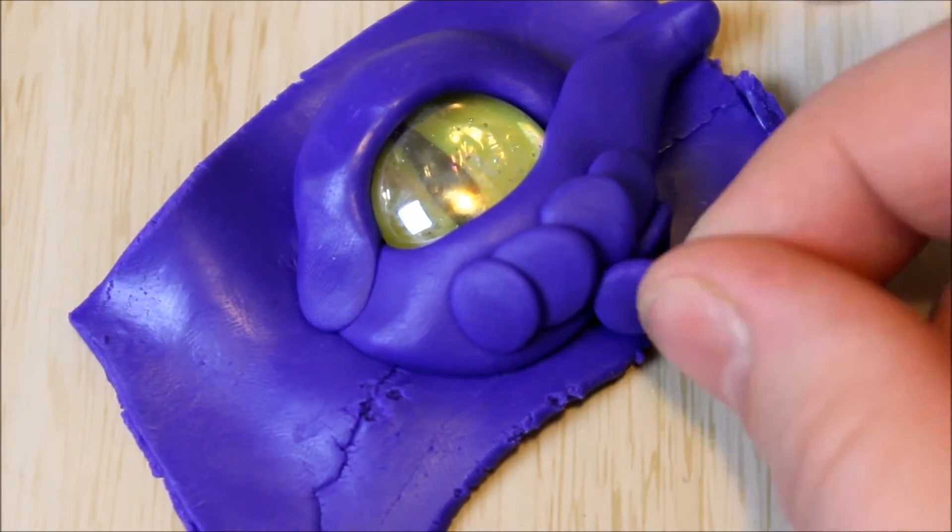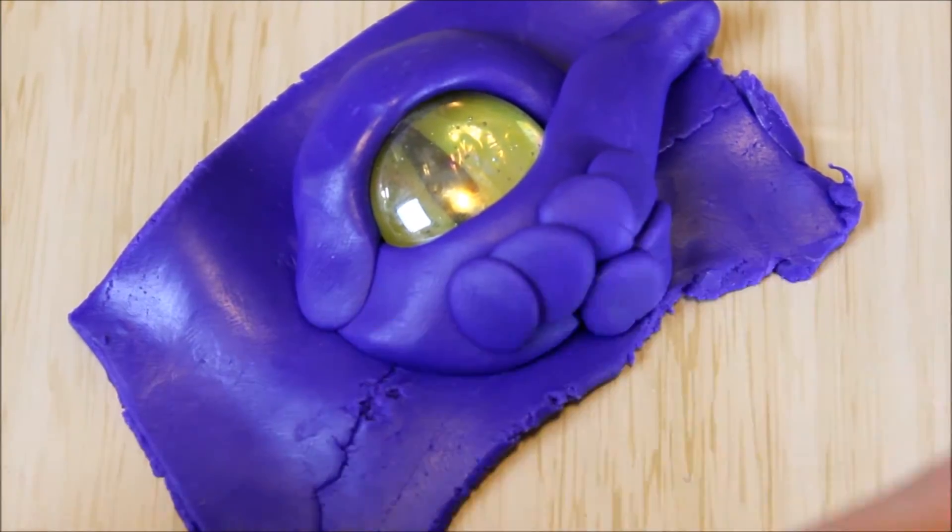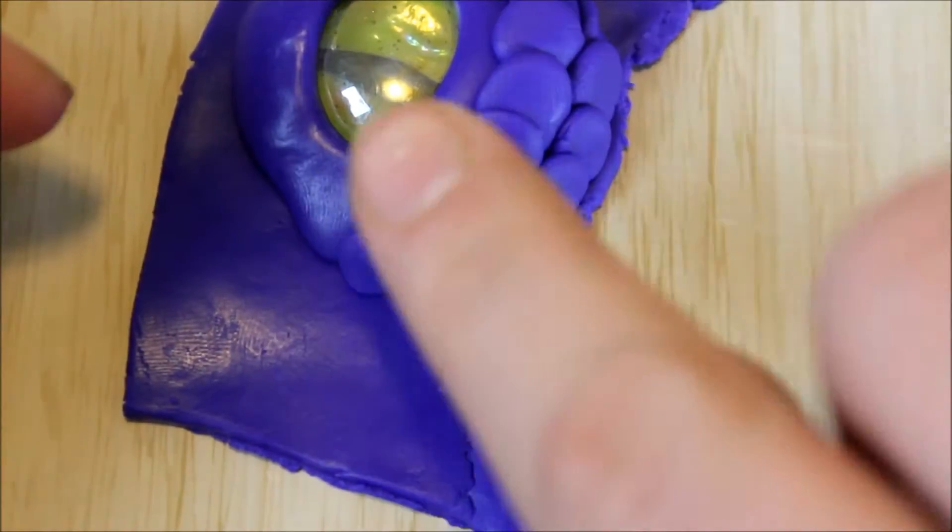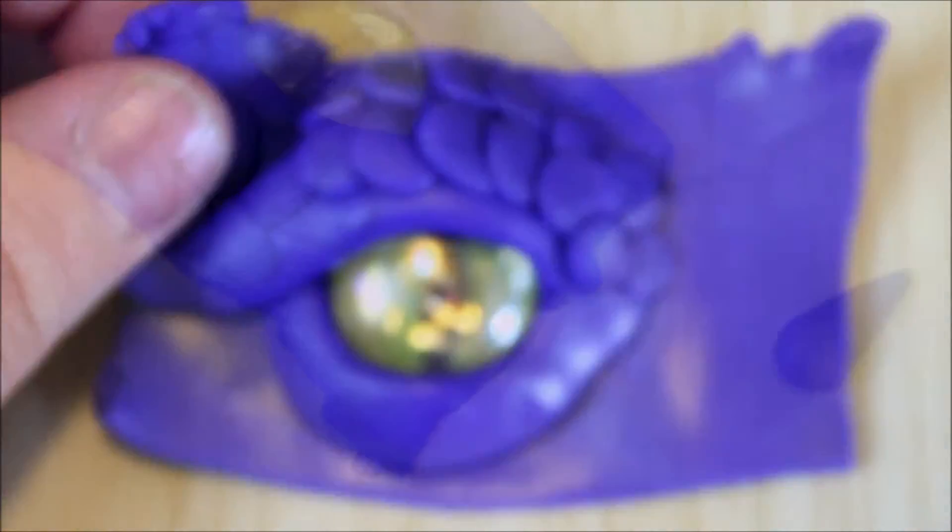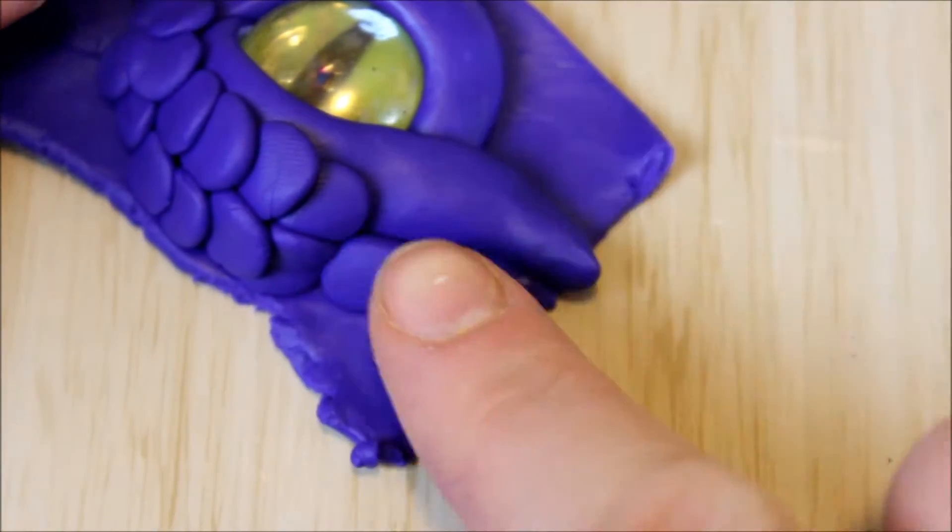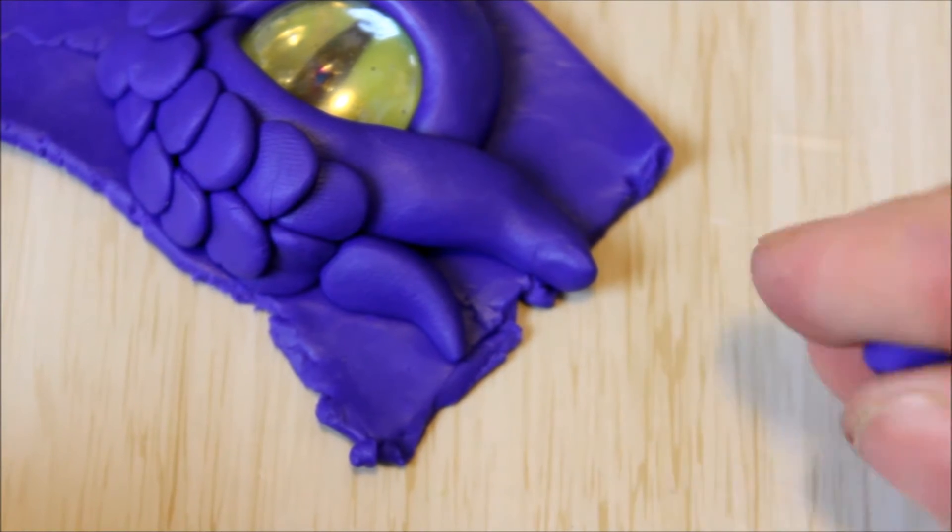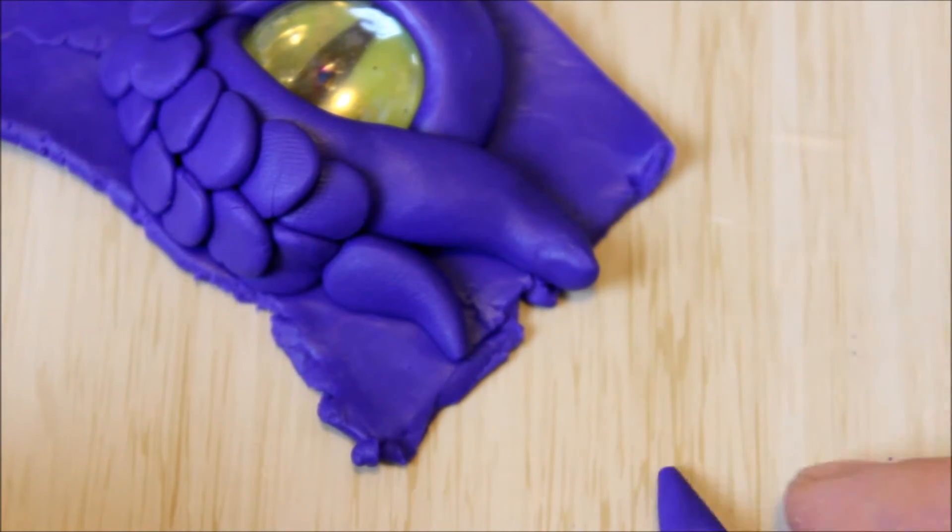So I started by creating my top lid by adding little bits of scales by rolling out little balls of clay that I sort of squished between my fingers to create a nice flat disc. And I started on one side and then continued onto the other side to overlap it so that my scales overlap and run all in the same direction.